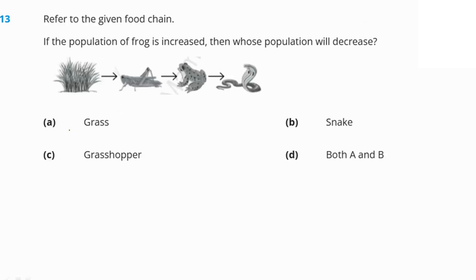Referring to the given food chain: if the population of frogs increases, it will eat more grasshoppers, so the grasshopper population will decrease. Option C is our right answer.